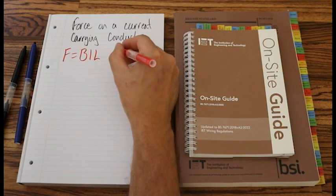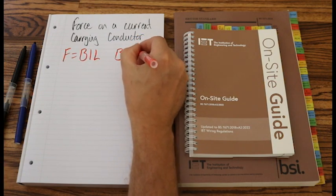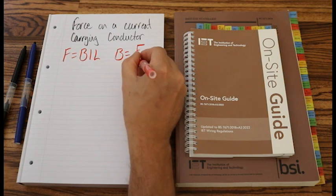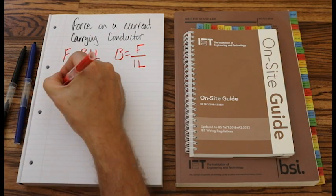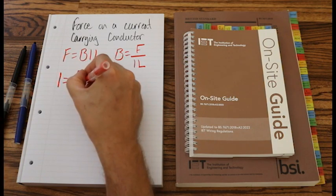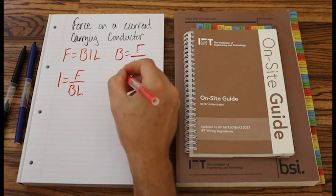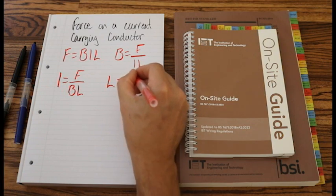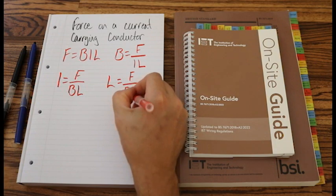Let's transpose this. So we'll have B equals F over IL. And then we have I equals F over BL. And finally, L equals F over BI.